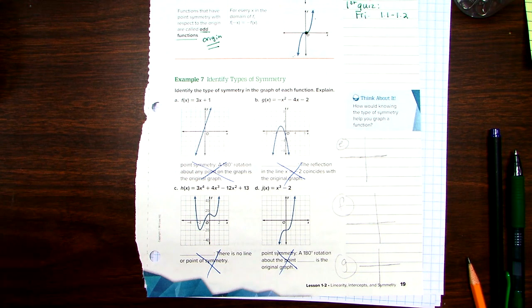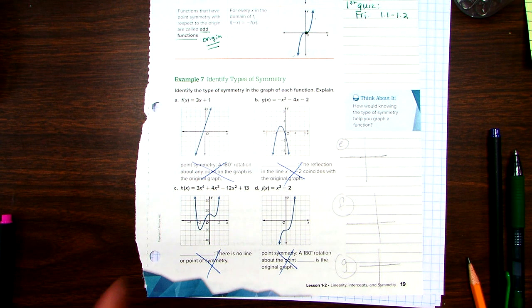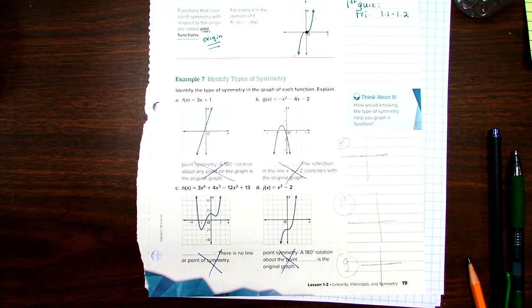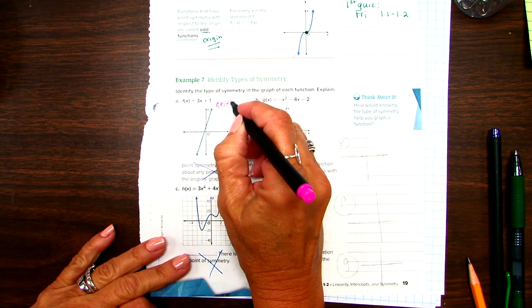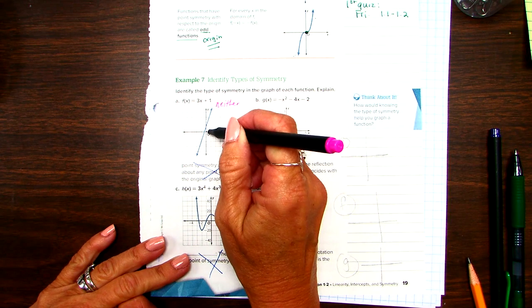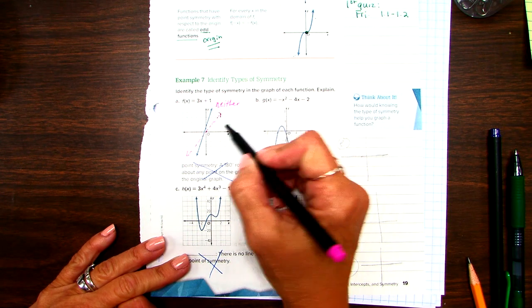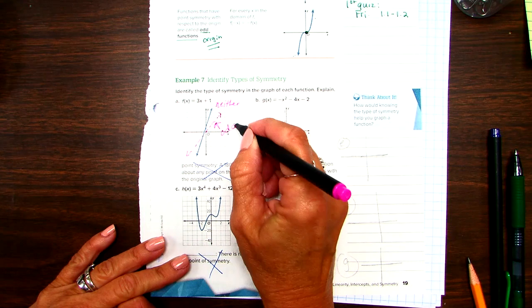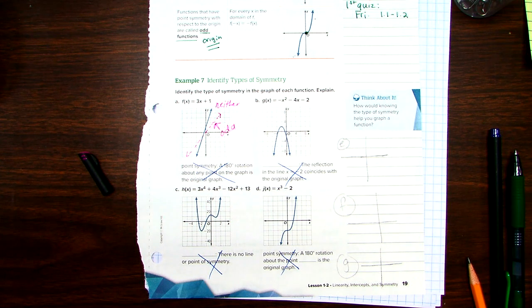Looking at this graph, if I took this line off of the coordinate plane, it has symmetry, but even and odd means where it is on the coordinate plane. The way this one is now is neither. Let me just show you how it could make it an odd one if it went through the origin.